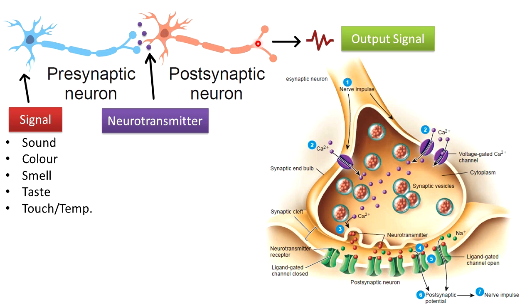At the terminal end of the axon, when the nerve impulse reaches the terminal part of the neuron, the terminal part is already filled with pouches called vesicles, which are filled with neurotransmitters. These are the synaptic vesicles. Upon activation of this neuron, it releases the neurotransmitters into the narrow gap — the synaptic cleft — between the two neurons. When these neurotransmitters bind with their receptors,